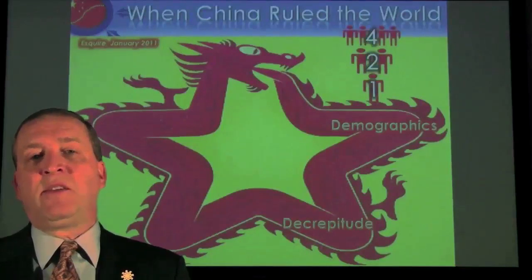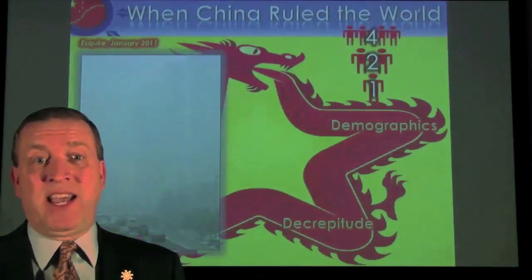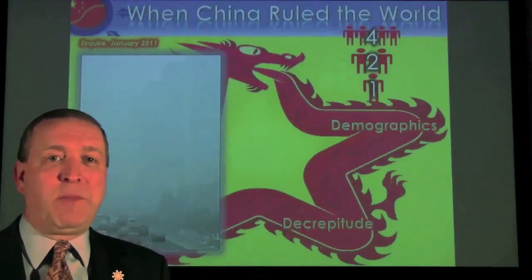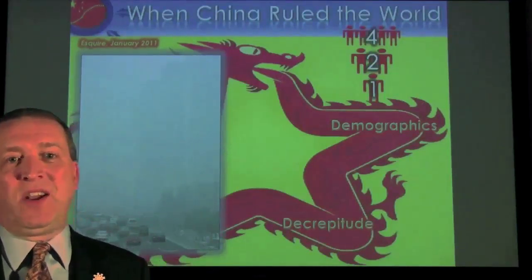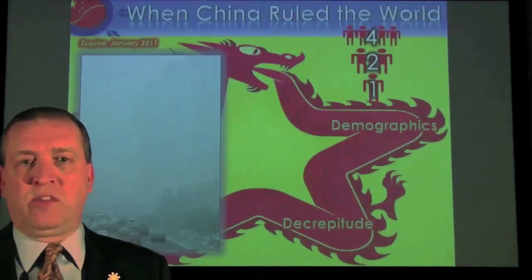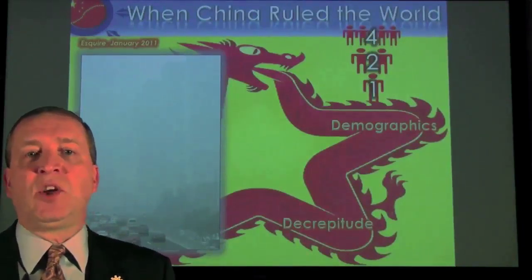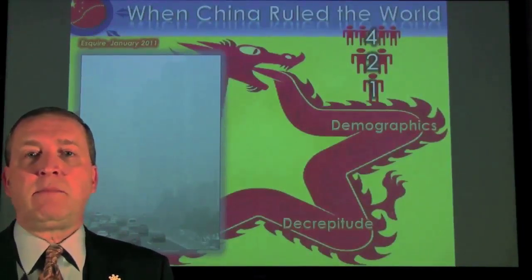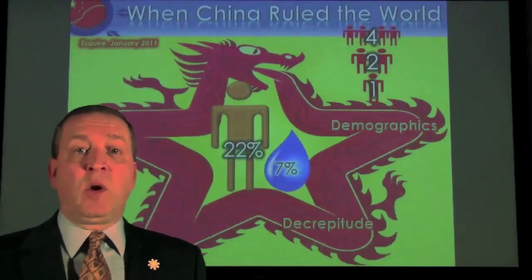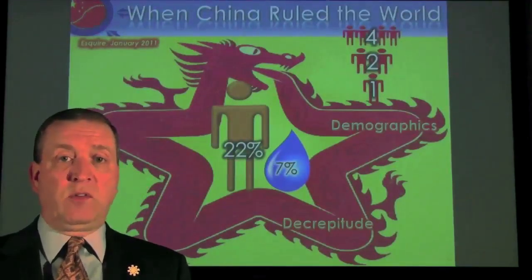Second, we could talk about decrepitude. Here's Beijing on a clear day. In London in 1870, they used to romanticize this and call it fog — in truth, it was always coal smog — and we're looking at similar pollutants in China. The bigger problem for China: 22% of the world's population, but only 7% of the world's water.